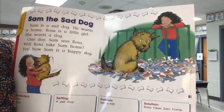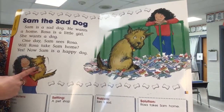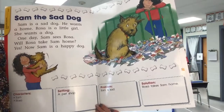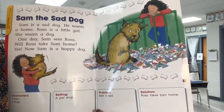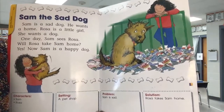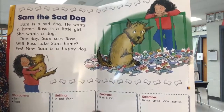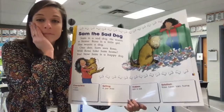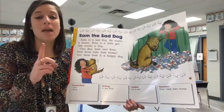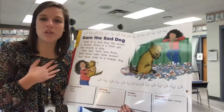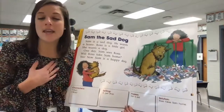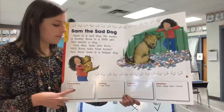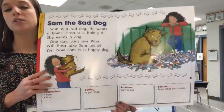Who in this story decides to take Sam home? Rosa. How does that make Sam feel? Happy. So in our story our characters are Rosa and Sam — we have both a person and an animal. Where do you think the setting is? The setting is a pet store — that's where we go to buy our animals most of the time. What's the problem? The problem is that Sam is sad. Can you say: oh no, problem? Sam is sad — that is a problem. But what's the solution? Rosa takes Sam home. Can you show me a smile and say: Rosa takes Sam home? That is the solution. So we have character, setting, problem, and solution — those make this story interesting.